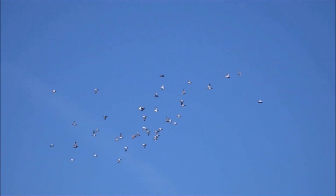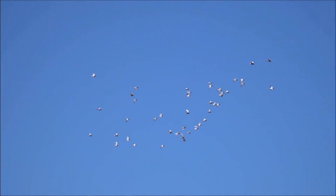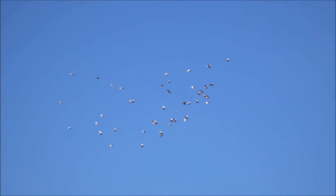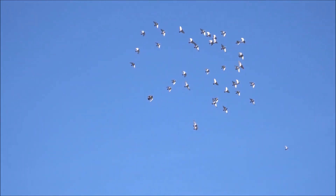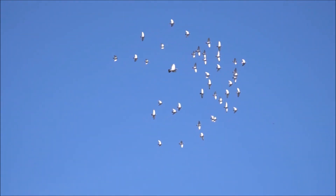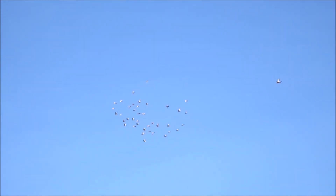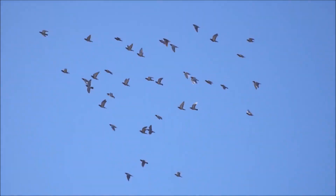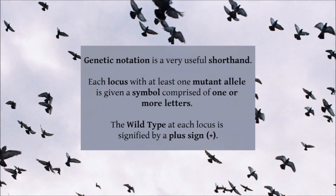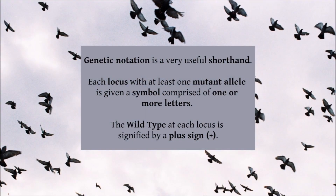Today we're going to learn about Punnett squares, which are a great tool to calculate what kind of babies to expect from a pair of pigeons. But before we can learn about Punnett squares, we need to have a quick lesson on genetic notation. Genetic notation is a very useful shorthand we use to record the alleles that our birds carry and can pass on to their offspring.